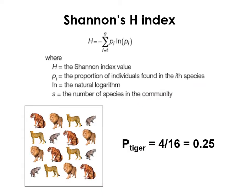Shannon's H index incorporates both richness and evenness. To calculate H, you sum the proportions of each species multiplied by the natural logarithm of those proportions. For example, to calculate the proportion of tigers: if we have four tigers out of 16 total cats, that's 4/16 or 0.25. You do that for each species, multiply each proportion by its natural log, then sum them all up.